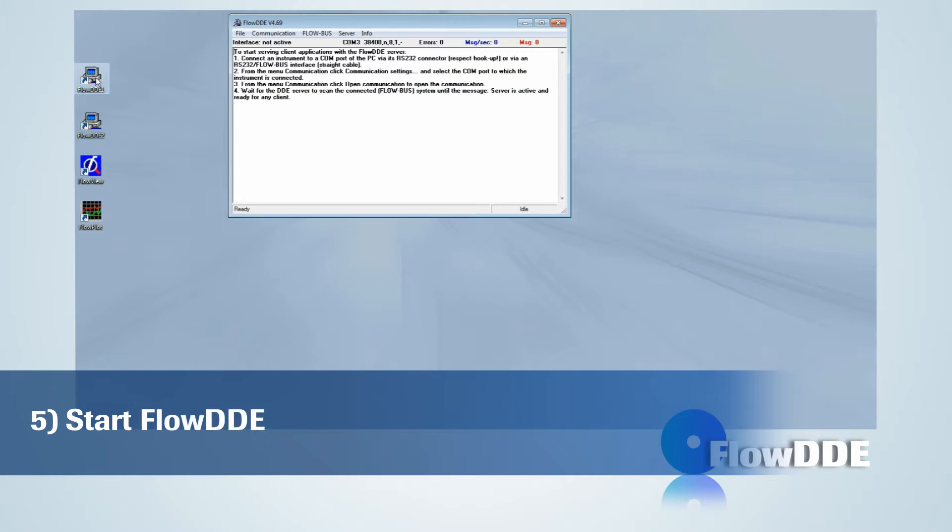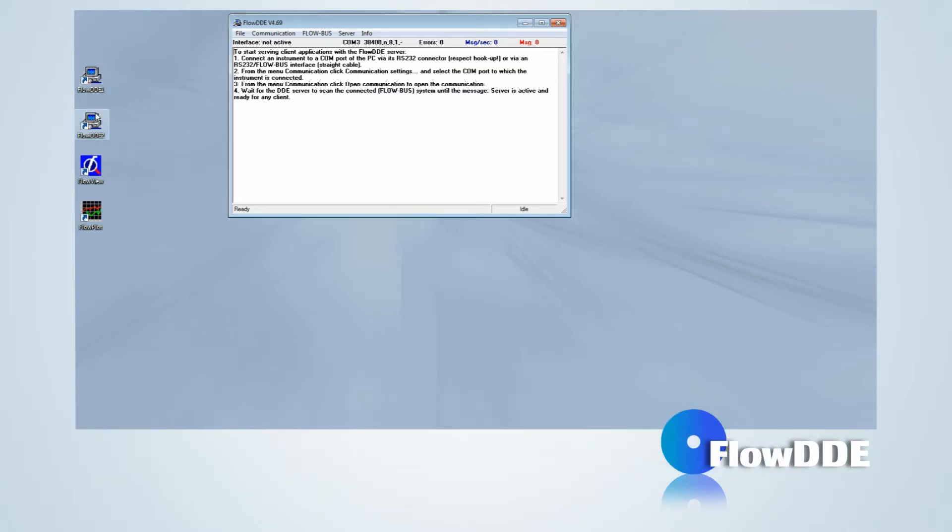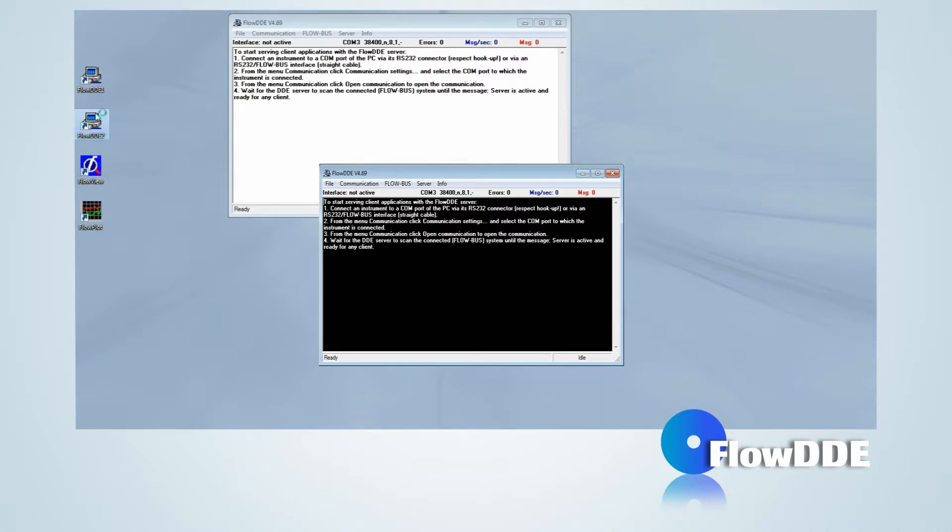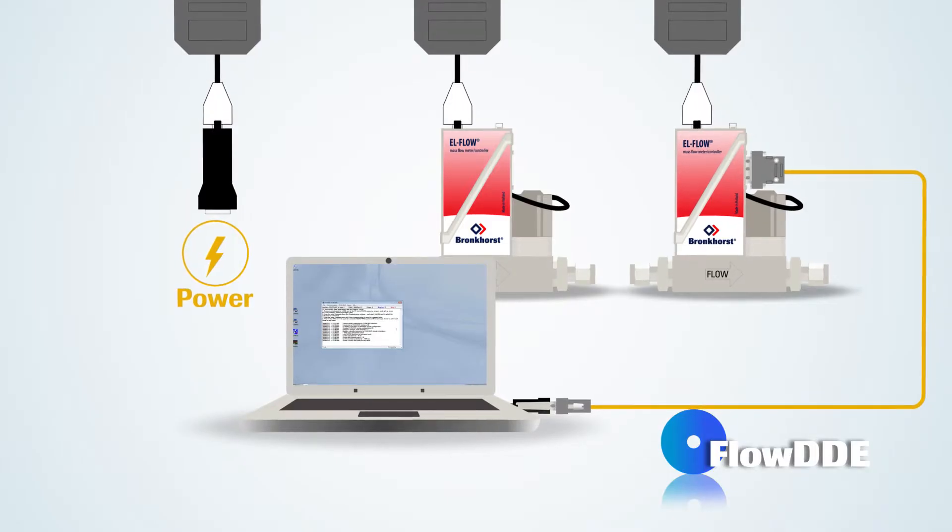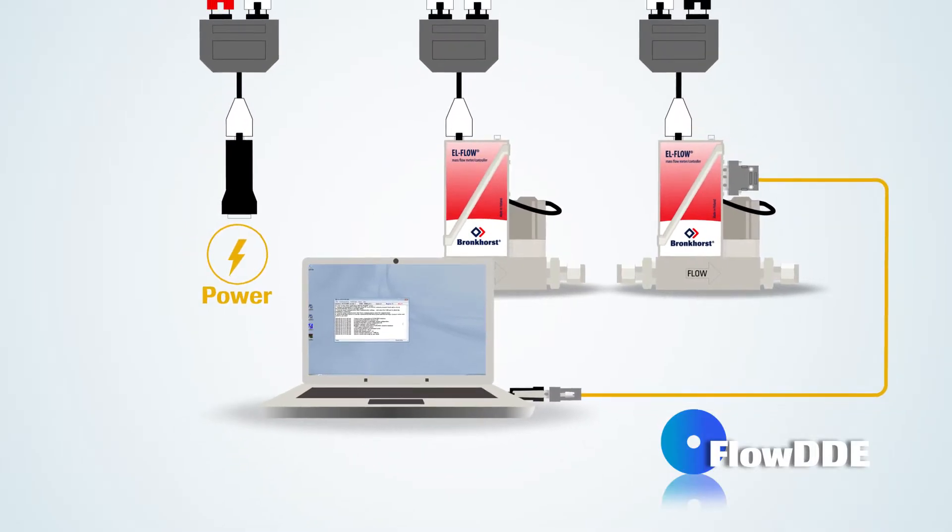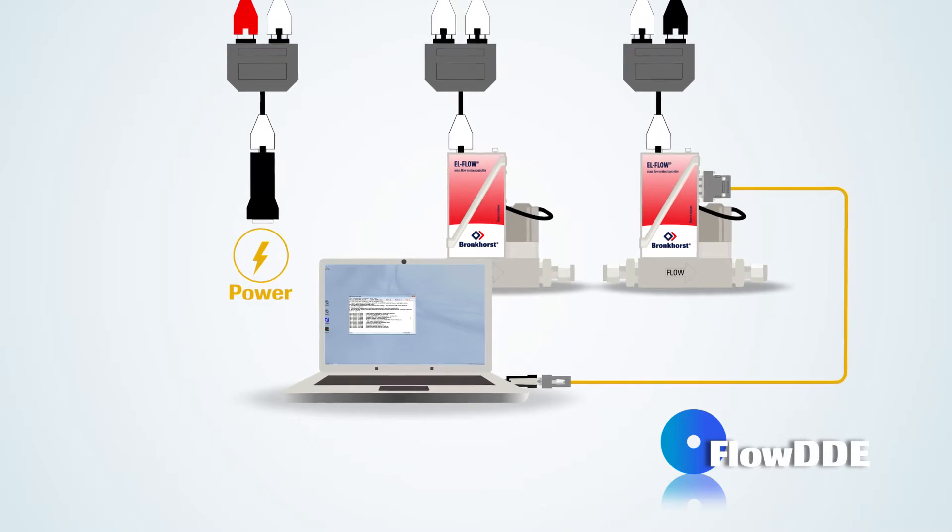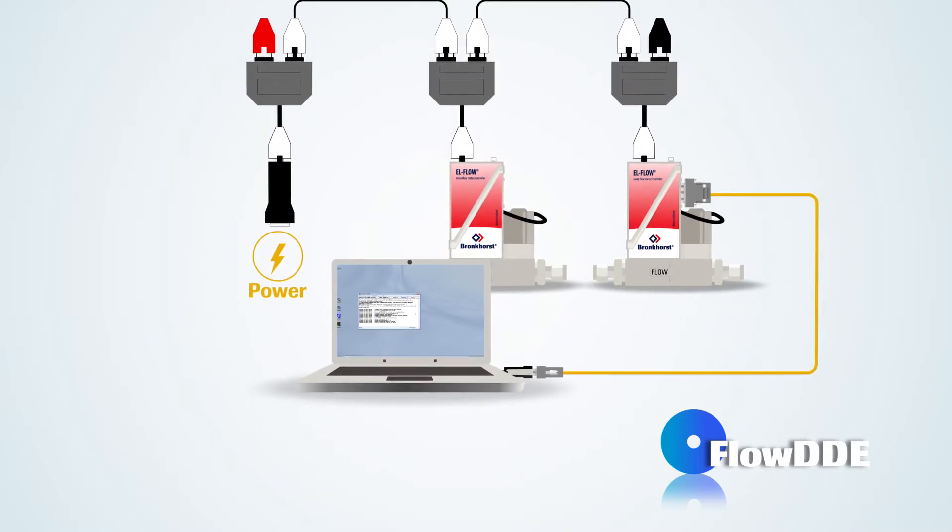During installation, two Flow DDE servers will be installed, Flow DDE and Flow DDE second. Each Flow DDE server can independently communicate with an RS-232 based instrument or a Flow Bus system consisting of one or more instruments with Flow Bus interface.